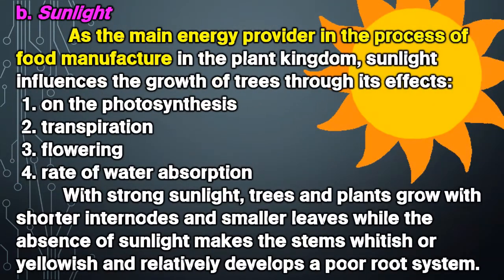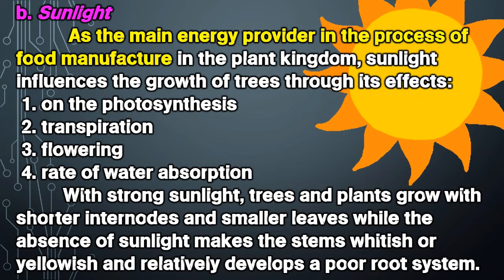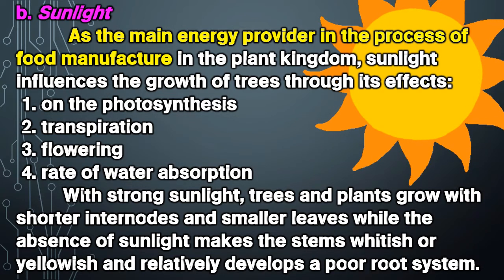Sunlight: As the main energy provider in the process of food manufacture in the plant kingdom, sunlight influences the growth of trees through its effects.